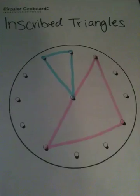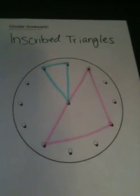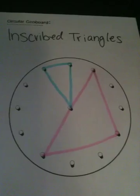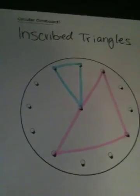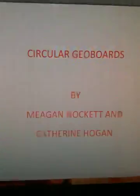Last, here are a few different triangles representing that the blue is not an inscribed triangle while the pink is. And that is just about all we have on circular geoboards. Thanks!